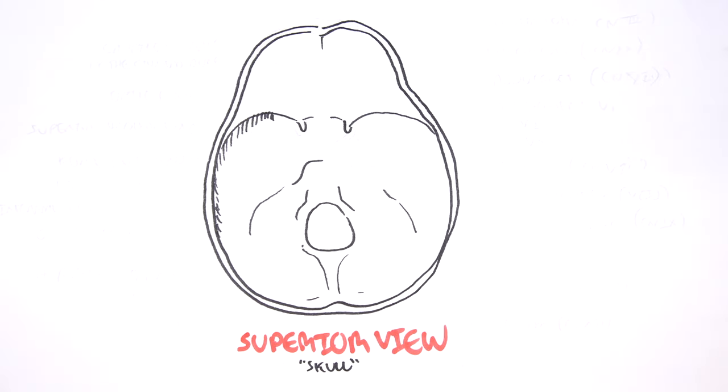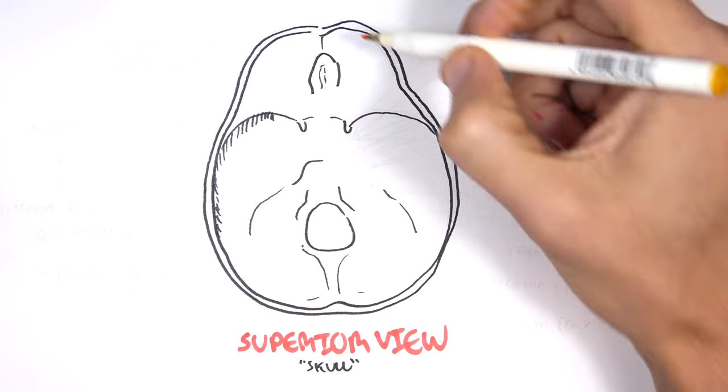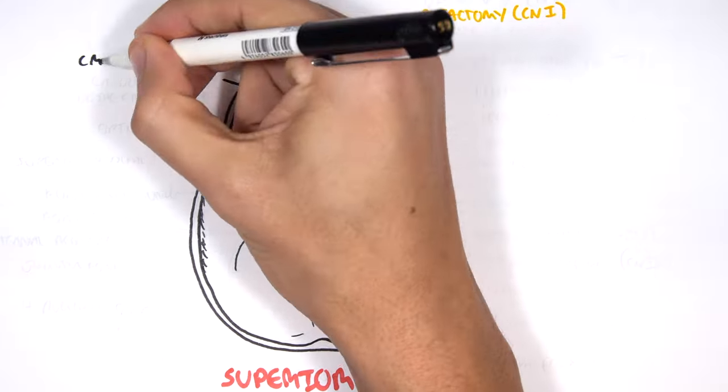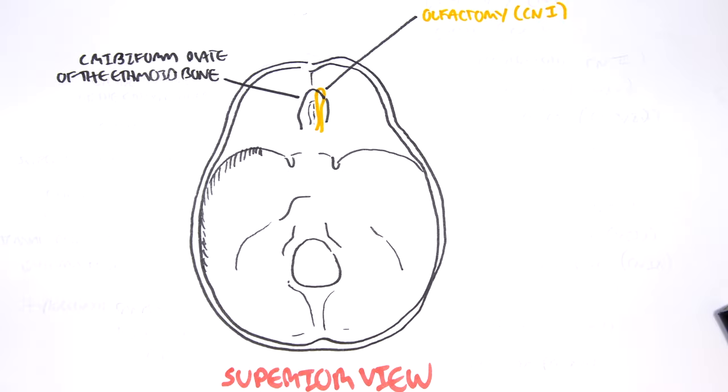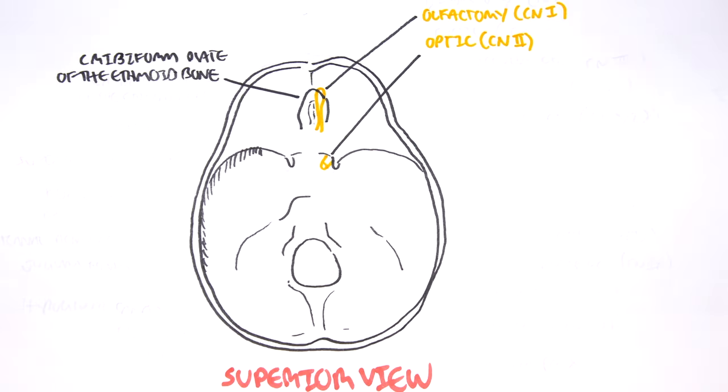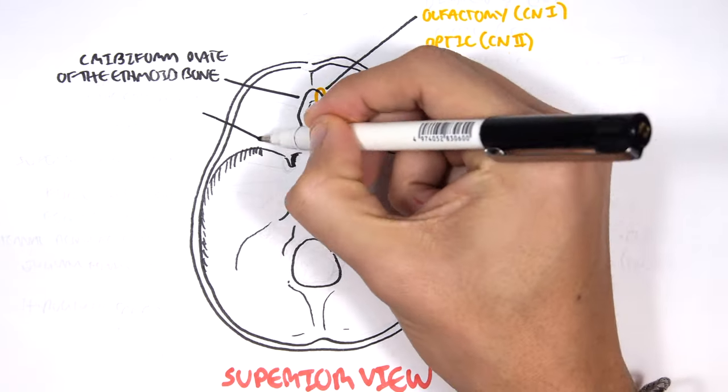Let's begin with cranial nerve number one, which is your olfactory nerve. Your olfactory nerve sits on the cribriform plate of the ethmoid bone and its function is for smell. Your optic nerve, your cranial nerve number two, it exits through what's known as the optic canal.